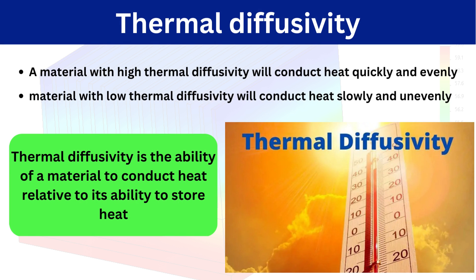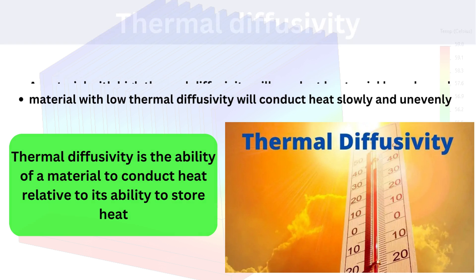Next we have thermal diffusivity. Thermal diffusivity is the ability of a material to conduct heat relative to its ability to store heat. The material with higher thermal diffusivity will conduct heat quickly and evenly, while the material with lower thermal diffusivity will conduct heat slowly and unevenly.